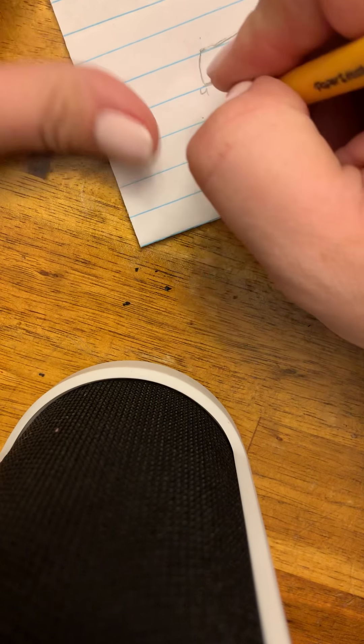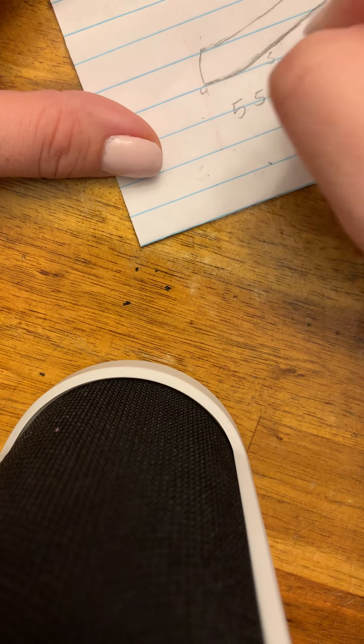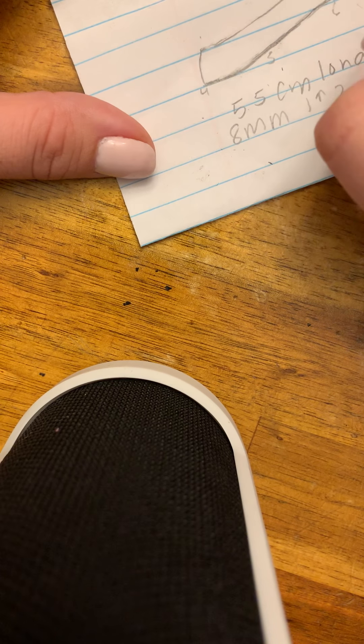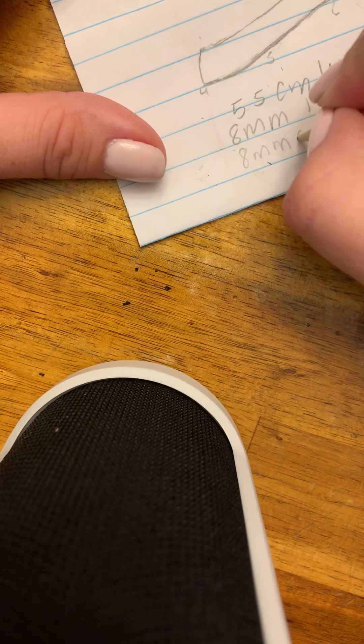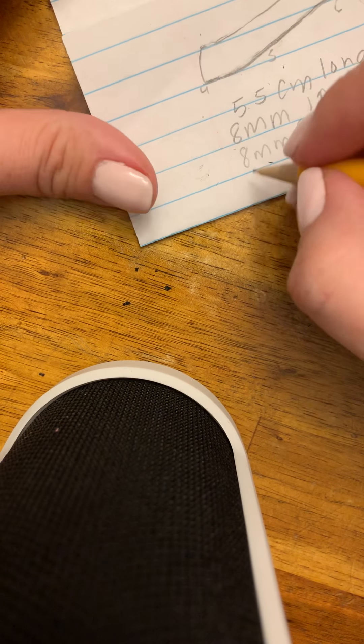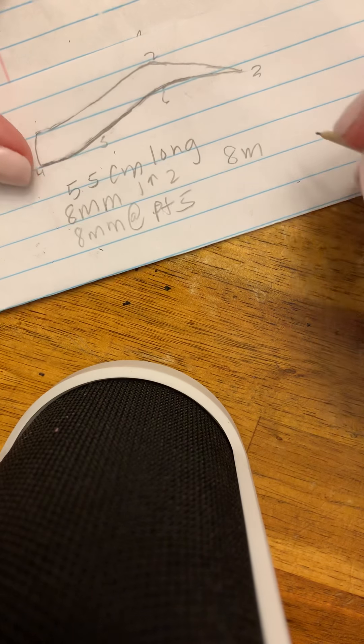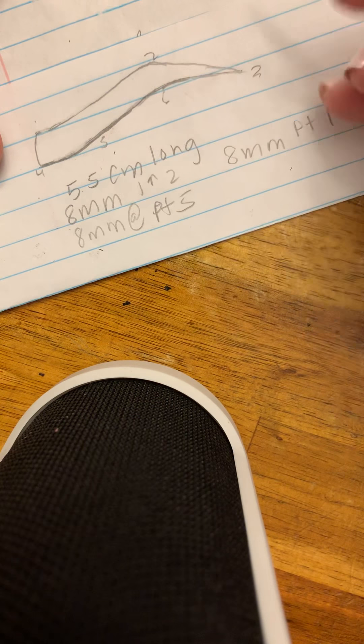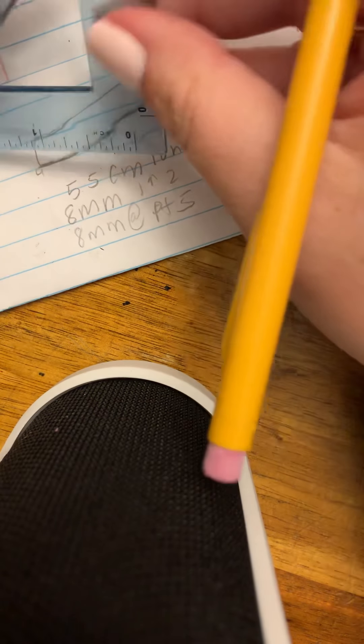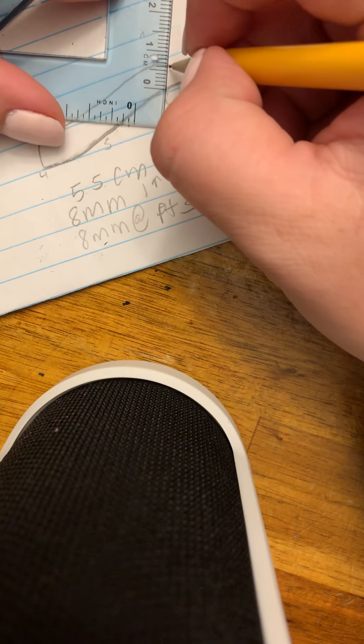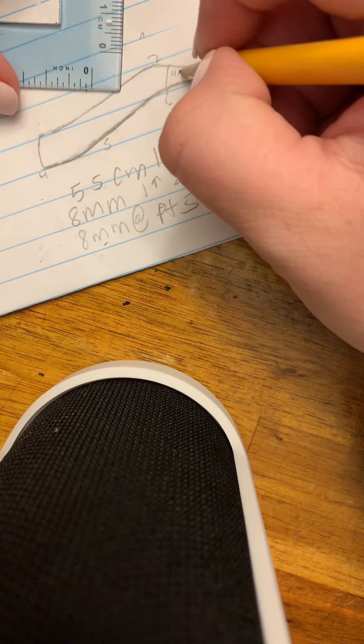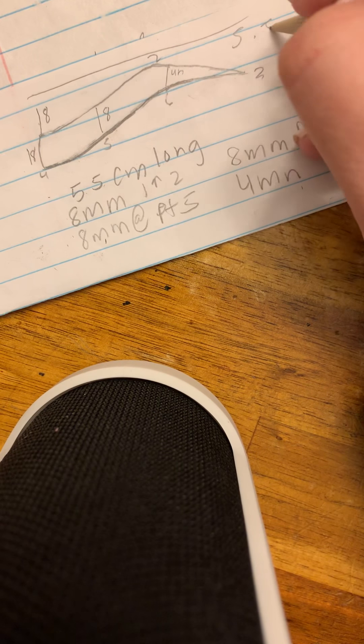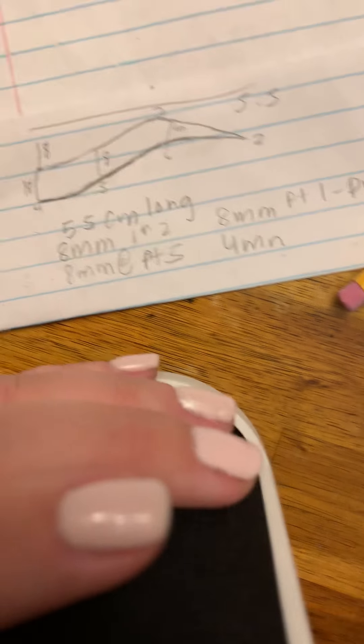So numbers to remember: 5.5 centimeters long, 8 millimeters from point one to two, 8 millimeters at point five, 8 millimeters point one to point four, and then the other one is at six, it should be 4 millimeters. Let's see how I did - 4 millimeters, 8, 8, 8, 8, 5.5. All right, I hope this helps a little. Give it a shot, let me know how it turns out.